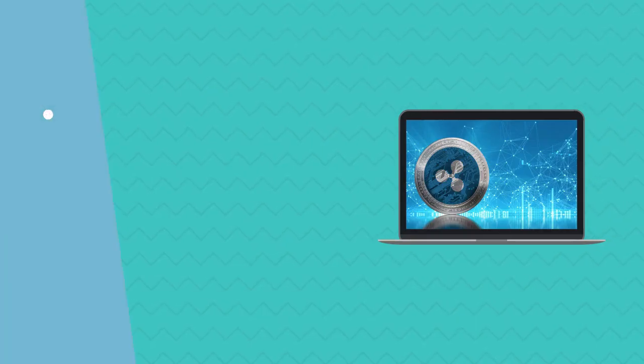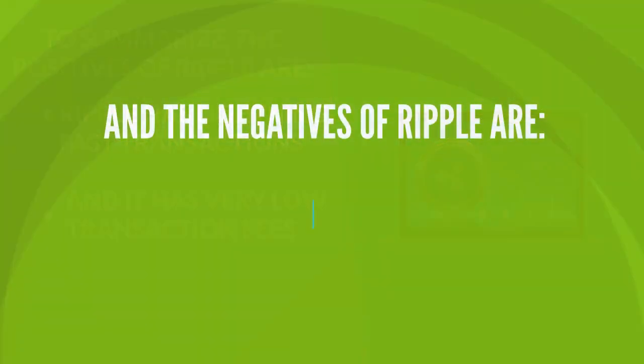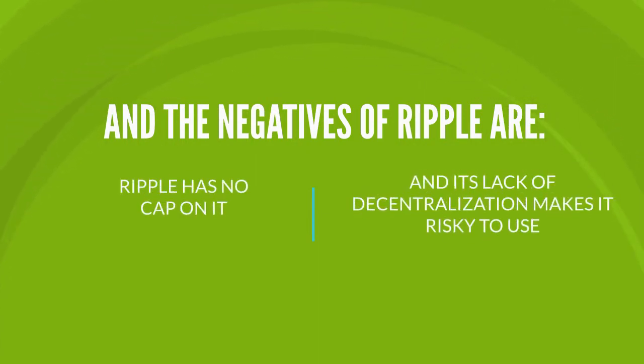To summarize, the positives of Ripple are: Ripple has lightning-fast transactions, and it has very low transaction fees. And the negatives of Ripple are: Ripple has no cap on it, and its lack of decentralization makes it risky to use.